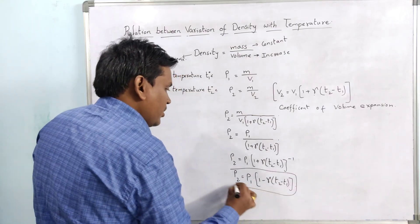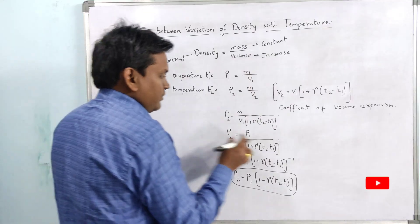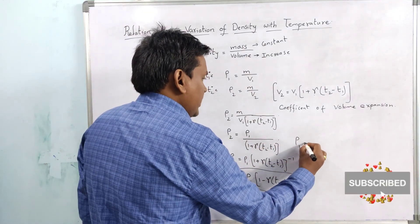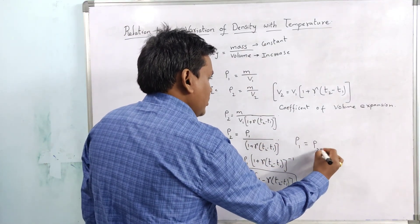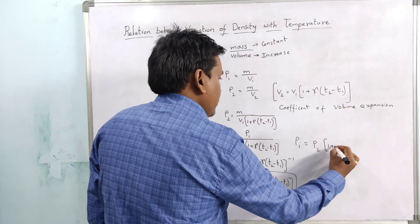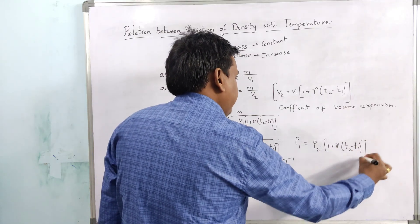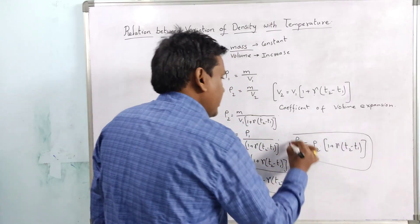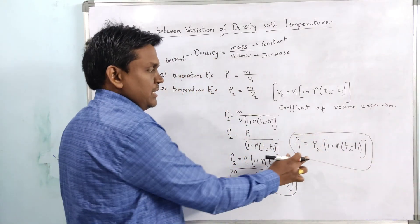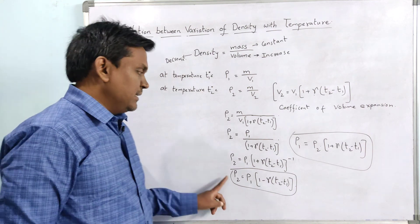This is rho 2, and coming to rho 1, if you see here, rho 1 equal to rho 2 into 1 plus gamma into T2 minus T1. This is rho 1 value, this is rho 2 value, and this is the relation between them.